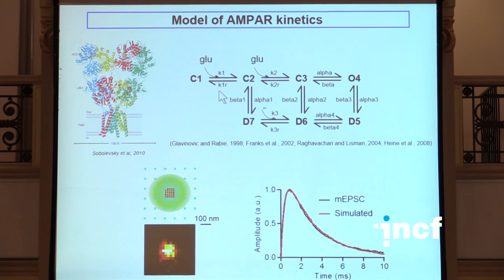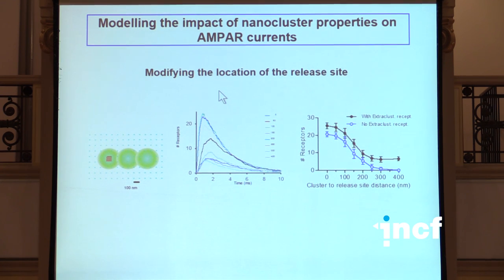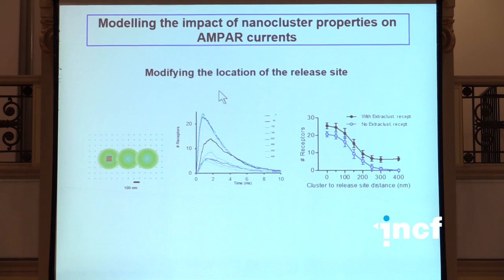We've been exploring that by modifying where you release the vesicle as compared to the location of the nano cluster. Of course, as you move away from the nano cluster, you're going to decrease massively the amplitude of the response because the extra-cluster density of receptors is much lower. What we've been a little surprised by is that actually you can do your release up to nearly 100 nanometers away from the cluster before having a very dramatic decrease in the amplitude of your current. So probably there might not have to be a perfect match between the site of release and the location of the cluster to get an important response.